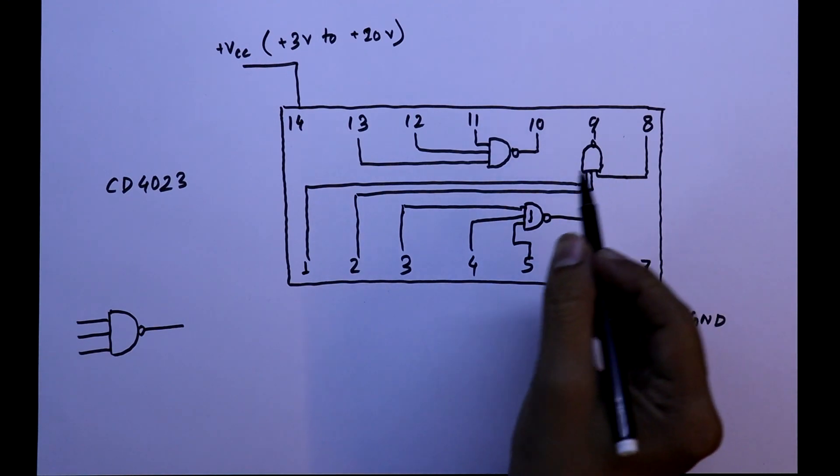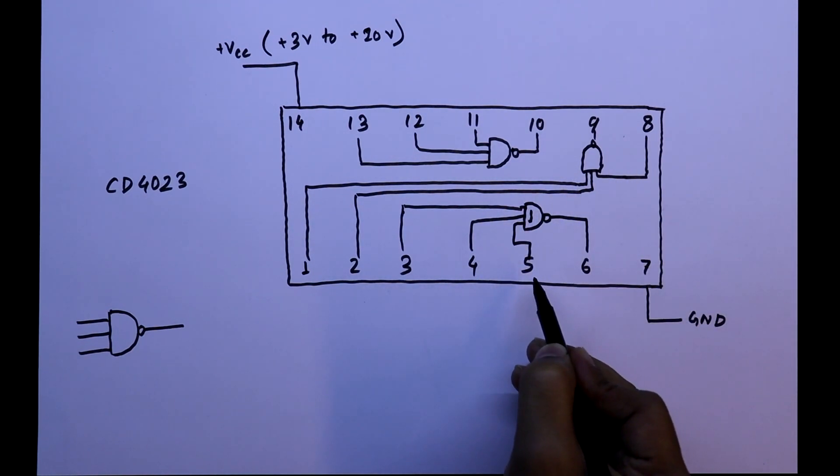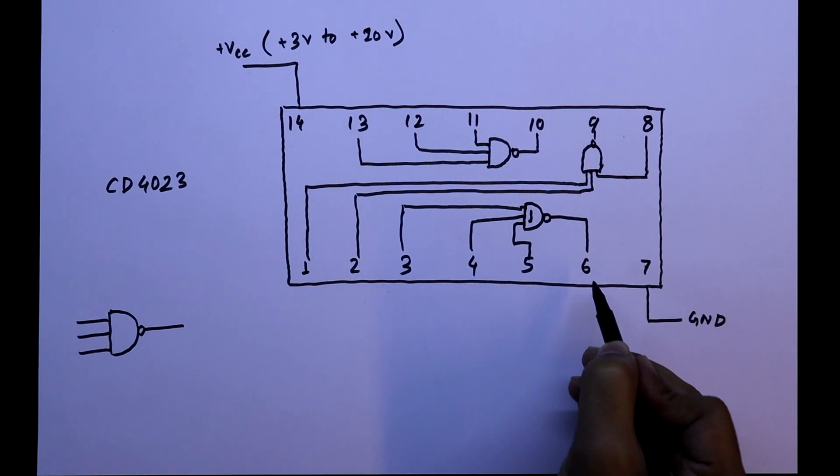For the NAND gate 1, pin 3, 4 and 5 are the input and 6 is output.